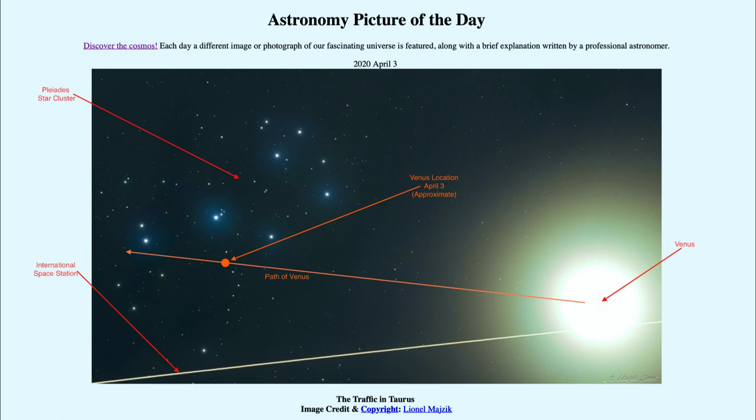Now, for the International Space Station, you do have to look up what its path will be. It varies slightly with each orbit and will not be in the same area again tonight, but you do have a chance to watch as Venus passes very close to the Pleiades.